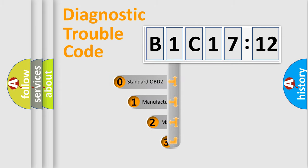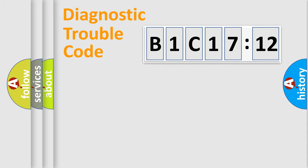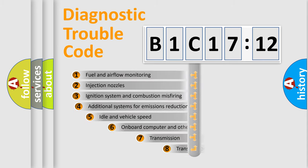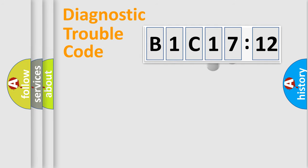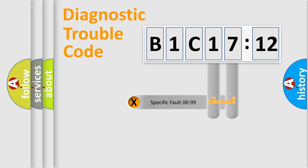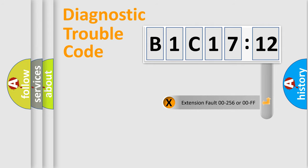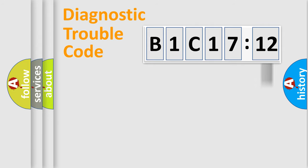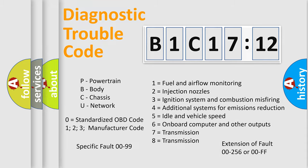This distribution is defined in the first character of the code. If the second character is expressed as zero, it is a standardized error. In the case of numbers 1, 2, or 3, it is a more specific expression of the car-specific error. The third character specifies a subset of errors. This distribution is valid only for the standardized DTC code. Only the last two characters define the specific fault of the group. The add-on to the error code serves to specify the status in more detail, for example, a short to ground. Note that such a division is valid only if the second character code is expressed by the number zero.